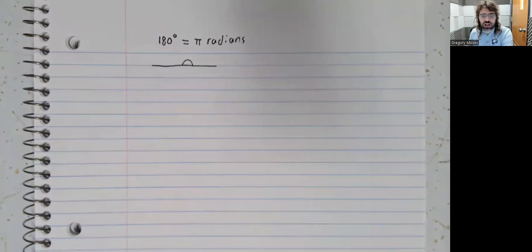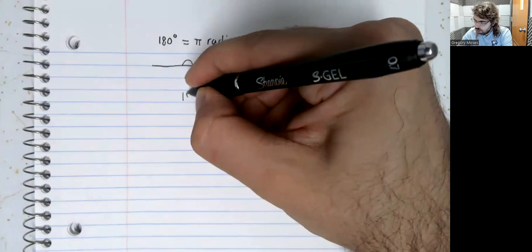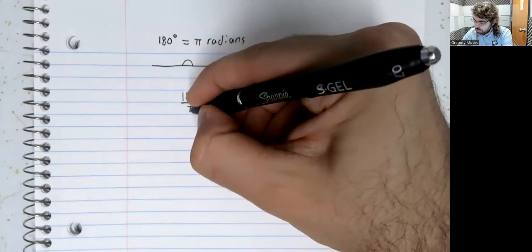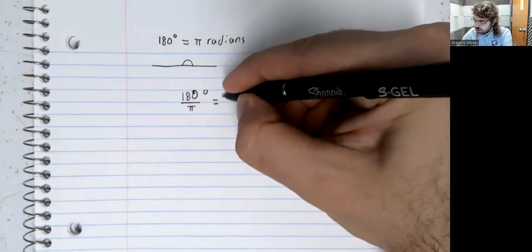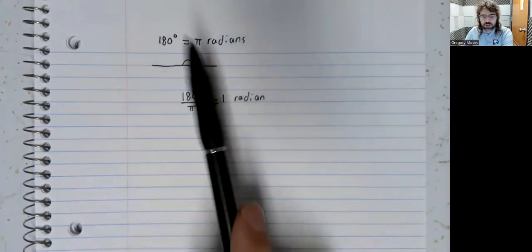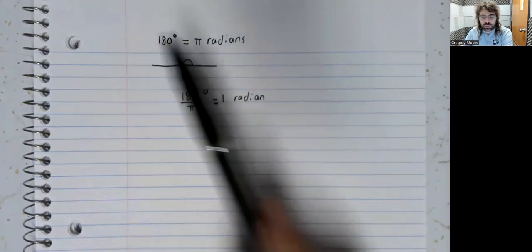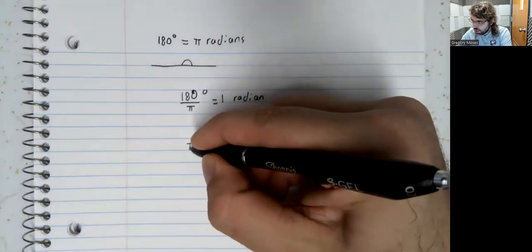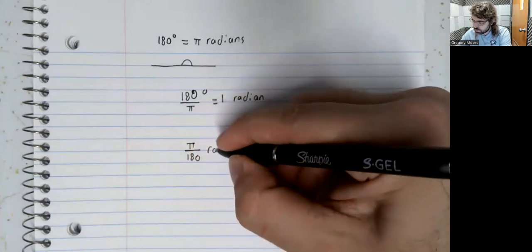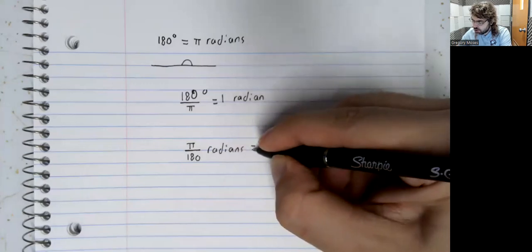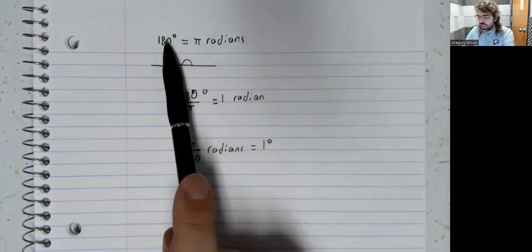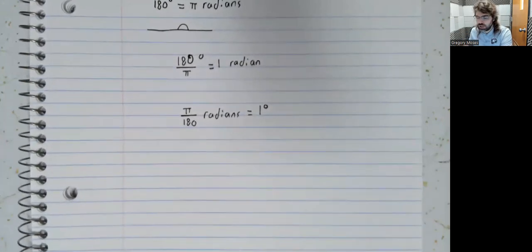So depending on which side you solve for, 180 divided by pi degrees equals 1 radian, or pi divided by 180 radians equals 1 degree.